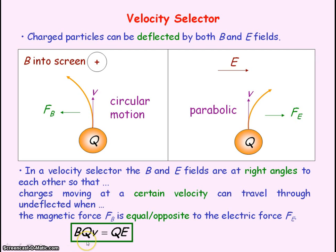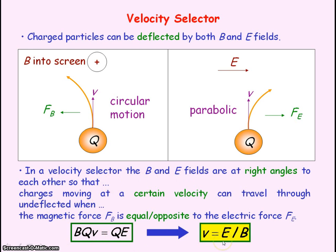So we can say our magnetic force, which equals BQv, will equal our electric force, which is Q times electric field strength E. So for charge Q to pass straight through the velocity selector — that is, to pass through both the magnetic and electric fields undeflected — then its velocity must equal the electric field strength E divided by the magnetic flux density B. It's important to note that the magnetic field and the electric field must be perpendicular to each other such that the magnetic force is in the opposite direction to the electric force.